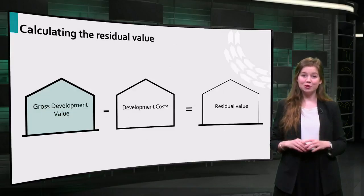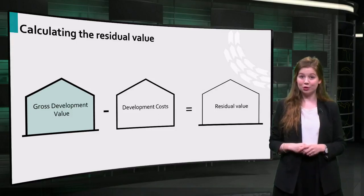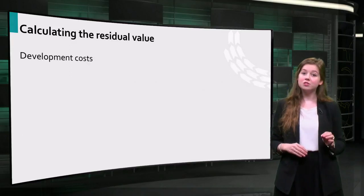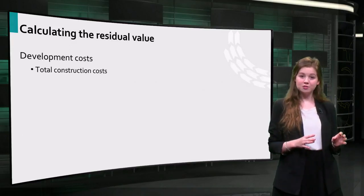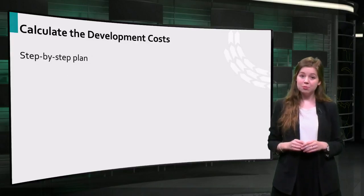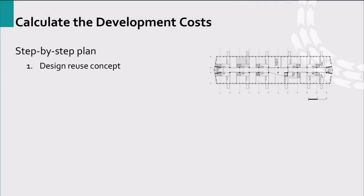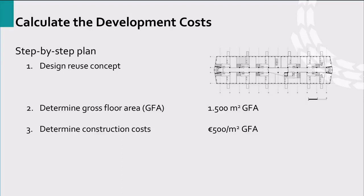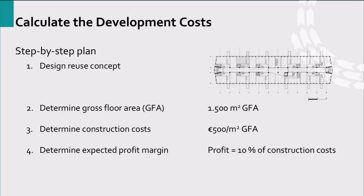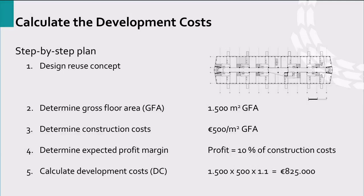Finally, when you have all these numbers, you can calculate the gross development value by multiplying the usable floor area by the market price per square meter. The second number we have to calculate is the amount of development costs. The development costs include the total construction costs and the expected profits. Take the reuse concept you designed, determine the gross floor area of the building, and determine the average construction costs for the specific reuse plan. Then calculate the expected profits, which can be a percentage of the total construction costs. You calculate the total development costs by adding the construction costs and the expected profits.